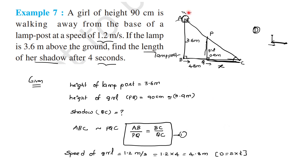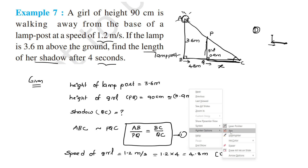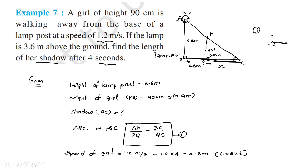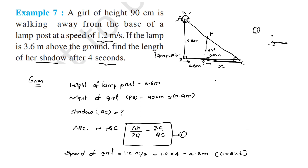From the similar triangles: AB/PQ = BC/QC. That is, corresponding sides give us AB/PQ = BC/QC. So AB = 3.6, PQ = 0.9, BC = 4.8 + x, and QC = x. Therefore: 3.6/0.9 = (4.8 + x)/x.